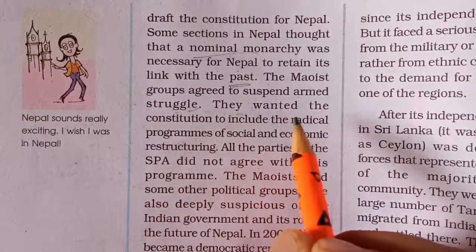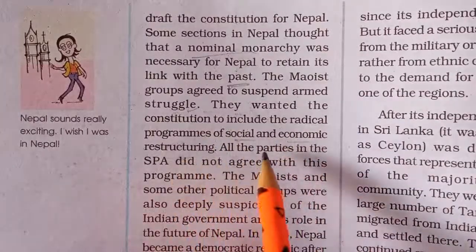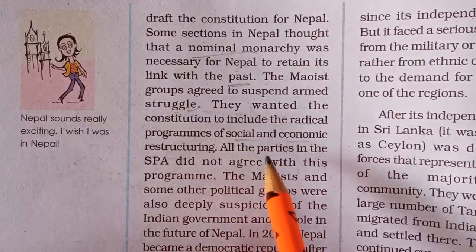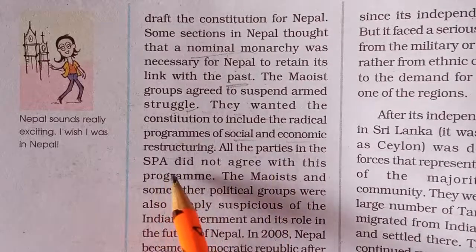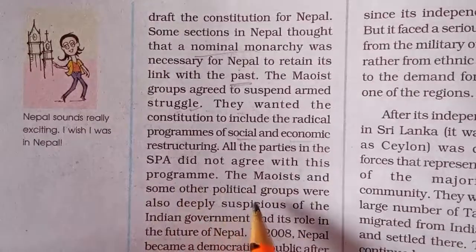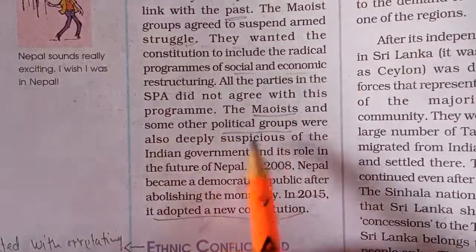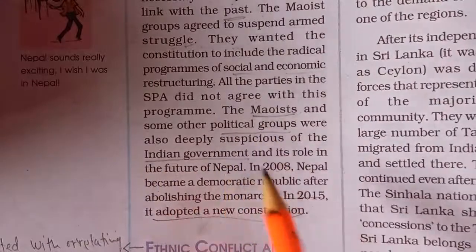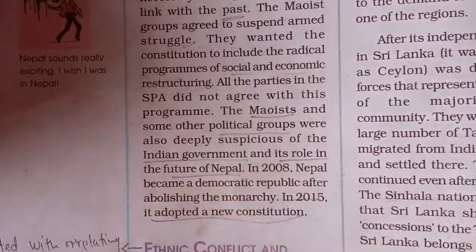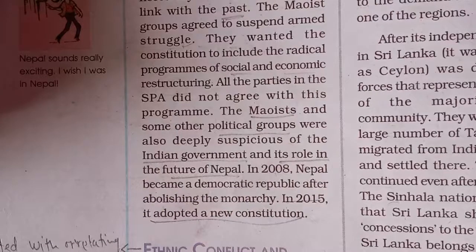The Maoists demanded that the constitution to be framed for Nepal should include programs of social and economic restructuring — that social and economic policies should be restructured and re-implemented. All parties in the Seven Party Alliance (SPA) did not agree with this program. The Maoists and some political groups were also deeply suspicious of the Indian government's role in Nepal's future, doubting that India could potentially take over Nepal, though this was just a suspicion.